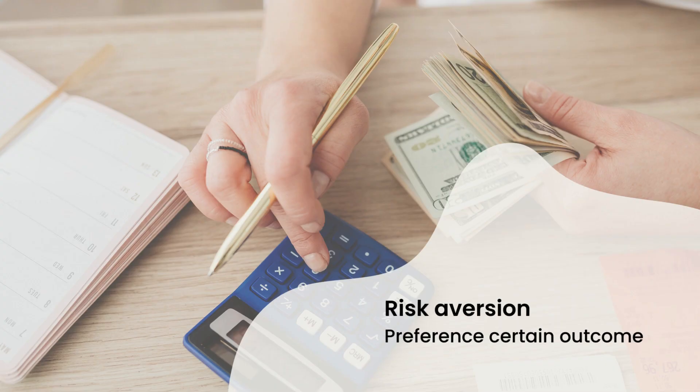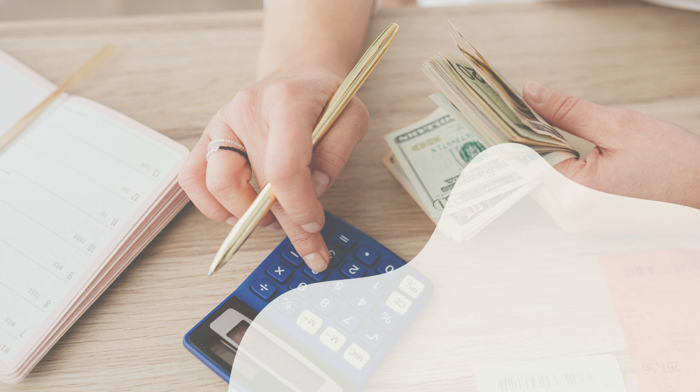Finally, prospect theory also suggests that people have a preference for certain outcomes over others, even when those outcomes have the same expected value. This is known as risk aversion for gains and risk seeking for losses.